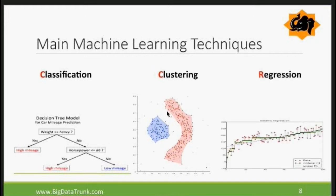The third technique is called regression. Regression is a way of defining a pattern, and based on that pattern, a linear or non-linear line is defined. Based on that, we identify what the next set of data is going to be and what the attributes and values for that will be.